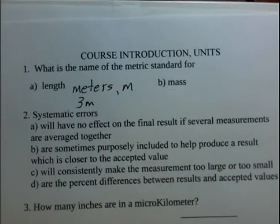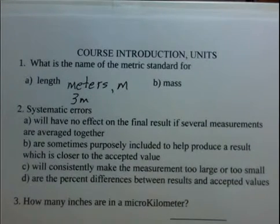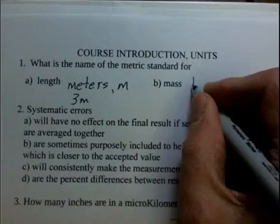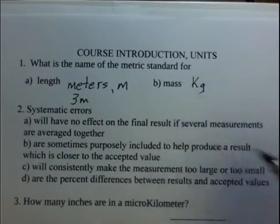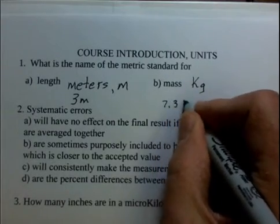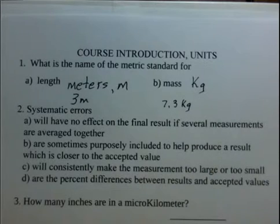For mass, we're not going to use pounds. Pounds is a unit of force, not of the quantity of material or the inertia of an object. So the mass in the metric system is the kilogram, so we might have 7.3 kilograms for an object. Meters for length, kilograms for mass.